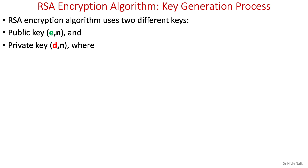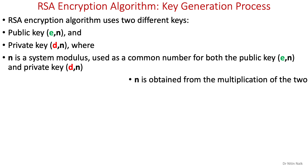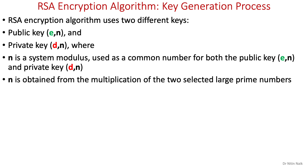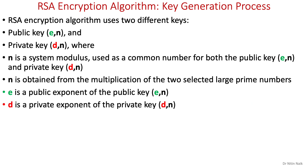We'll explain the RSA algorithm in two parts: first, the key generation process, and second, the encryption and decryption process. RSA uses two different keys — public key (e, n) and private key (d, n) — where n is the system modulus common to both keys, obtained by multiplying two selected large prime numbers. e is the public exponent and d is the private exponent.